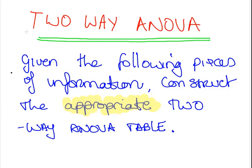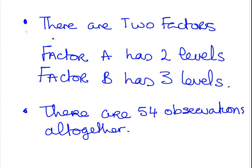So, two-way ANOVA table. What we are given is the following pieces of information. There are two factors. Well, that sort of makes sense because it's a two-way ANOVA table. The factor A has two levels and factor B has three levels. And there are 54 observations altogether.